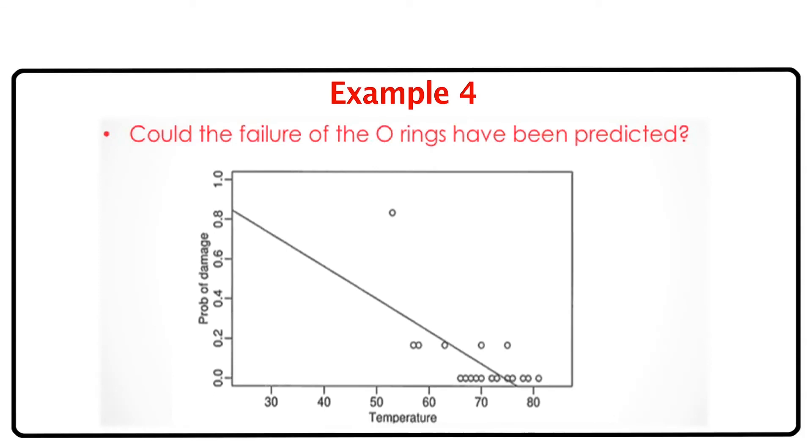Later, suspicion for the crash was fixed on the failure of a piece of equipment called the O-ring. Now in each of the two boosters on the rocket there are three O-rings, leading to a total of six O-rings. It turns out that there was controversy as to whether or not these O-rings had been adequately tested, and there was some belief that at low temperatures the O-rings could fail. So at the time of launch the temperature was 31 degrees Fahrenheit, and the question which arises in this case is whether or not we could have predicted the failure of the O-ring at 31 degrees Fahrenheit.